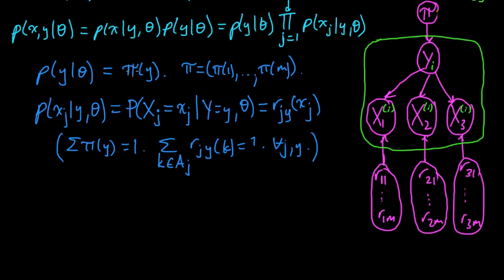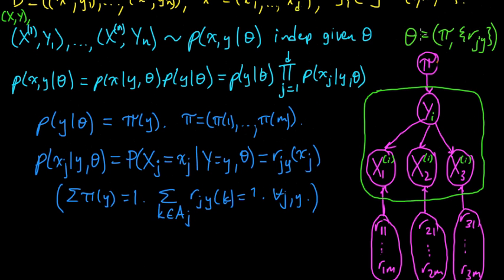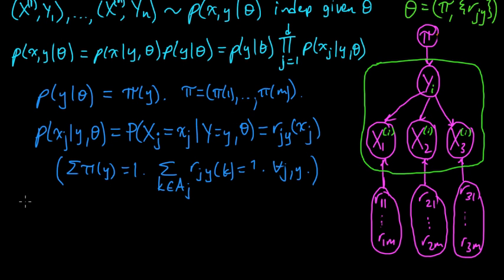The first parameter is π. Remember our parameter vector was all these distributions: we had π for the y's, and then we had all these R_{j,y} for each feature j and each possible value of y. So we need to put priors on all of those.